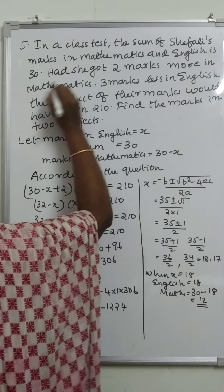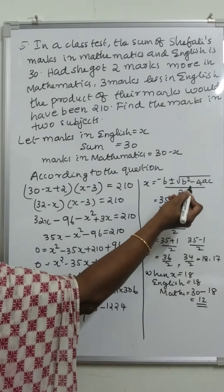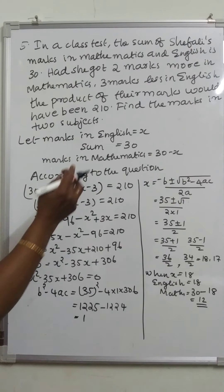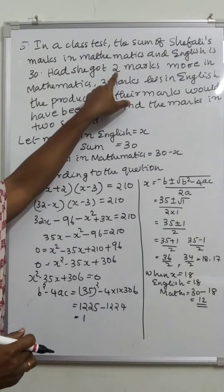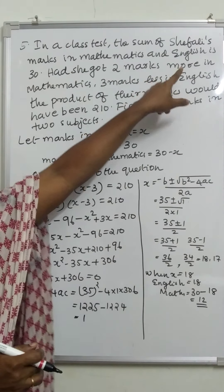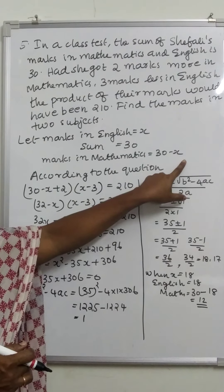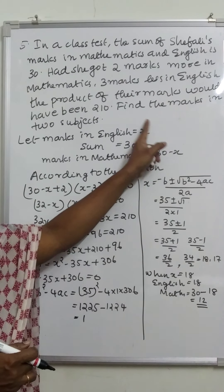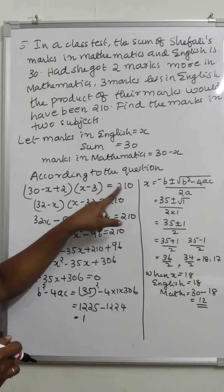Had she got two marks more in mathematics, the marks in maths would be 30 minus x plus 2, that is 32 minus x. Three marks less in English means the marks in English would be x minus 3. The product of their marks would have been 210. So the equation is 32 minus x into x minus 3 is equal to 210.